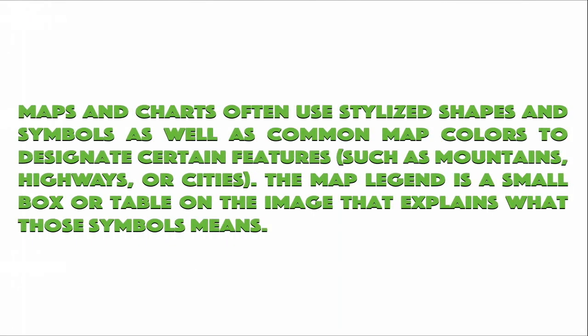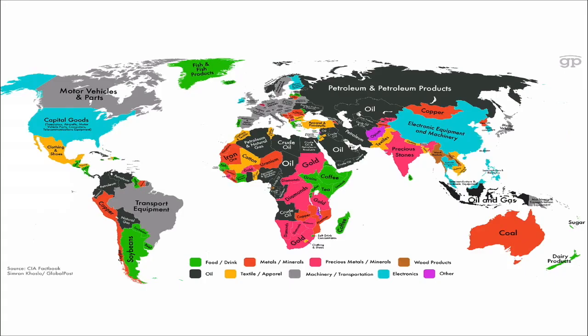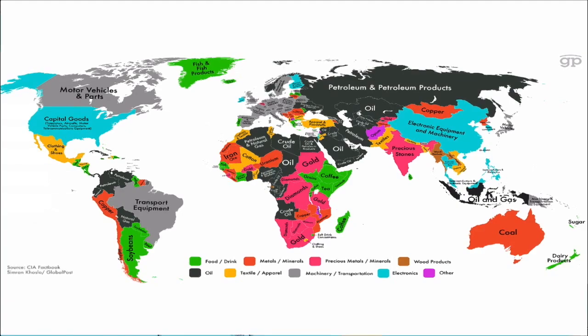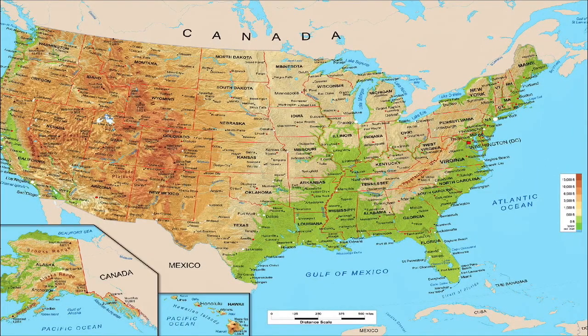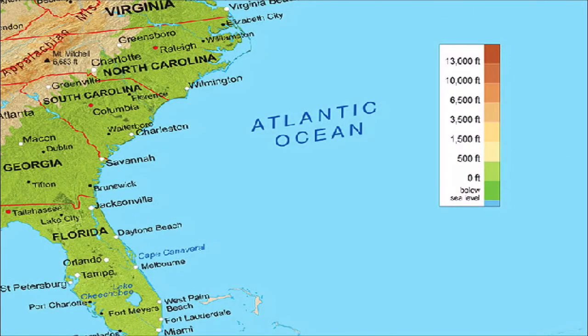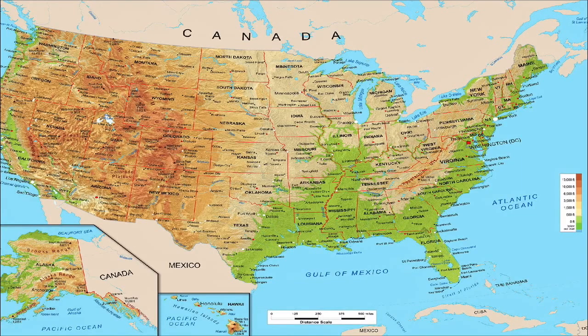Maps and charts often use shapes and symbols as well as common map colors to designate certain features such as mountains, highways, or cities. The map legend is a small box or table on the image that explains what those symbols mean. On this map, the legend displays the gross domestic product of each nation and what they export. On another map, we're seeing different elevations above sea level, color-coded for easier reading. Different maps carry different types of information, and using the legend or map key will help you understand what's being displayed.